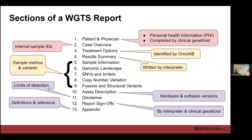The third major part of the report covers explanations, descriptions, and disclaimers. We have an assay description which includes the versions of all software tools used to generate the report — important for auditing, tracking, and reproducibility. We have a disclaimer describing our assays and mentioning limited detection thresholds. We have the report sign-offs, identifying which clinical genome interpreter and clinical geneticist signed off and when. Finally, there's an appendix with definitions, reference material, and hyperlinks to OncoKB and other reference sources.